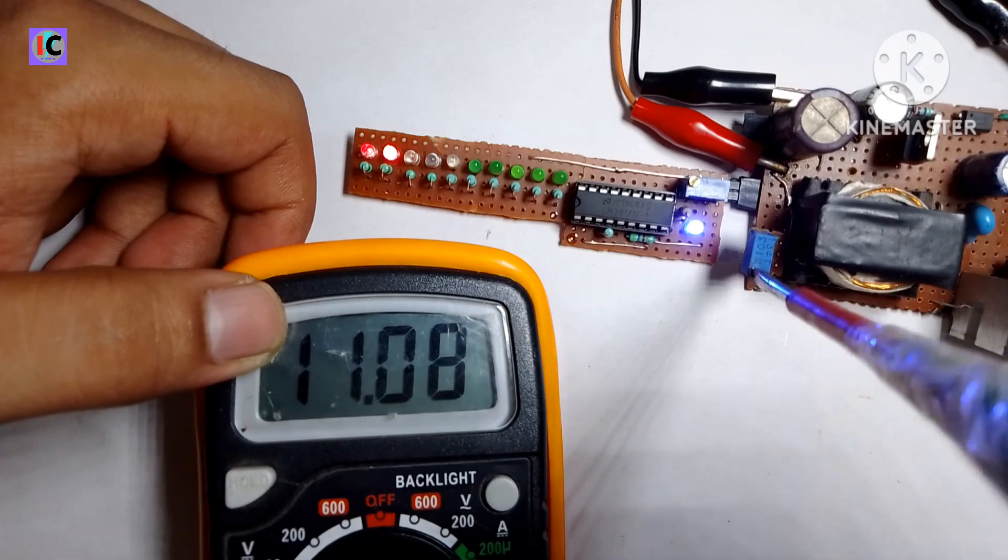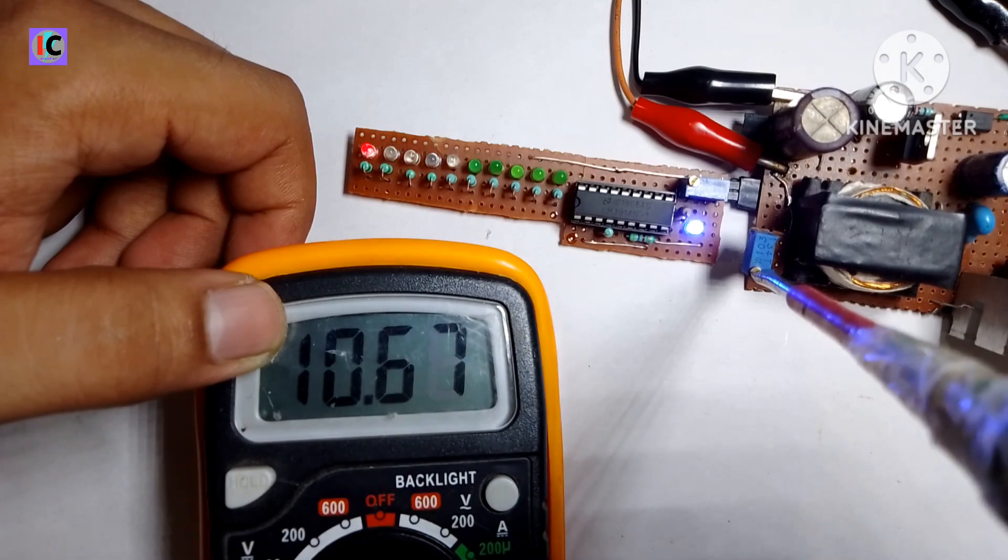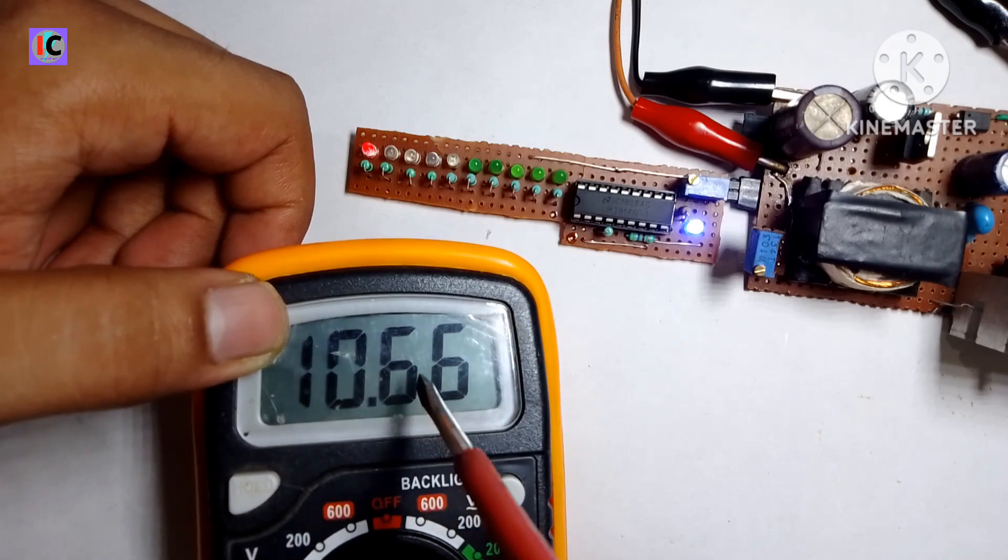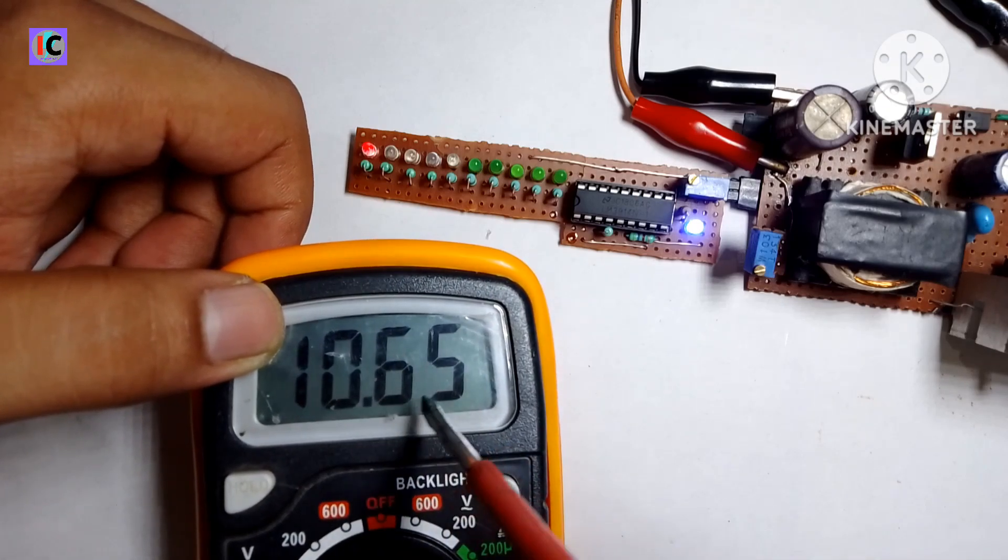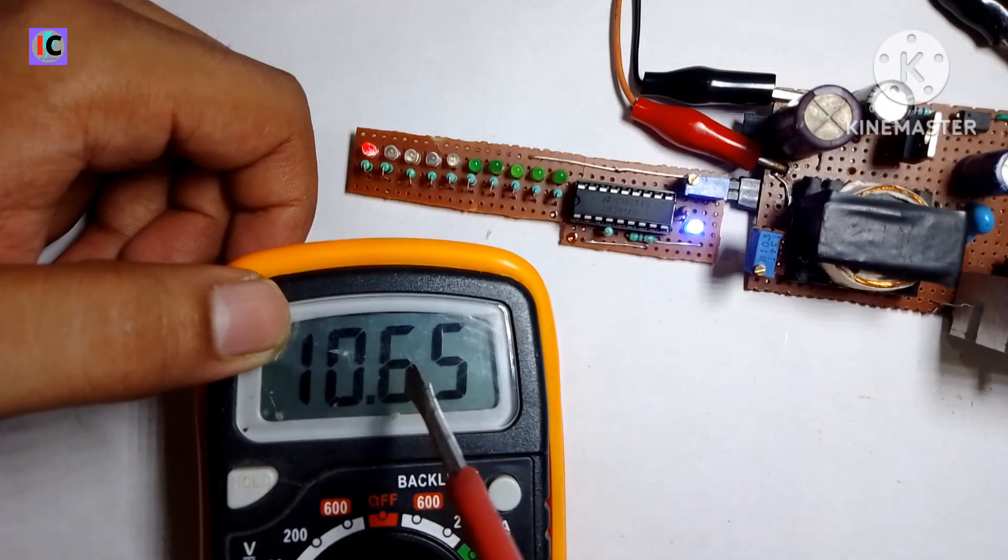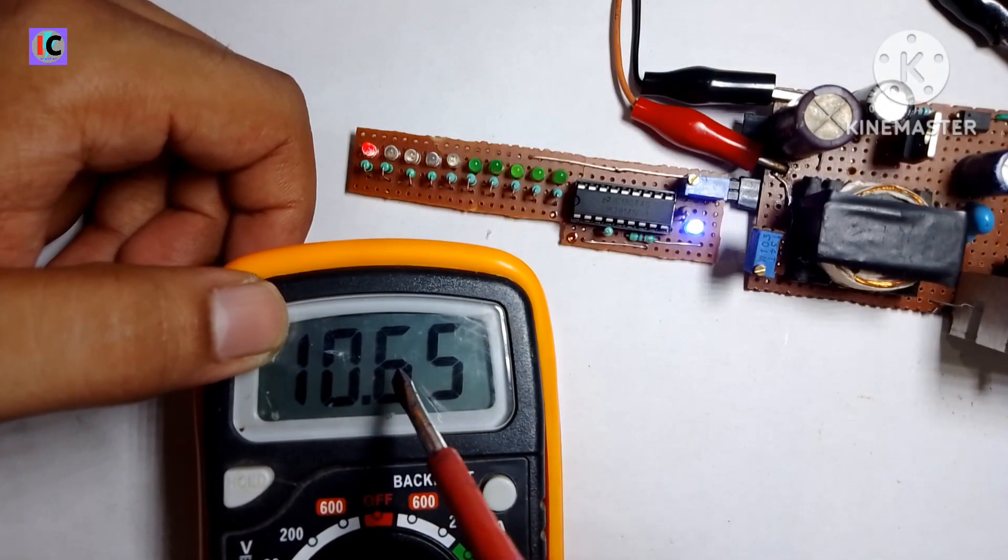At almost 10.5 volts, this is the low cutoff voltage of a 12 volt lead acid battery, and the last two red LEDs are still glowing for that indication. That indicates the battery is at very low voltage.